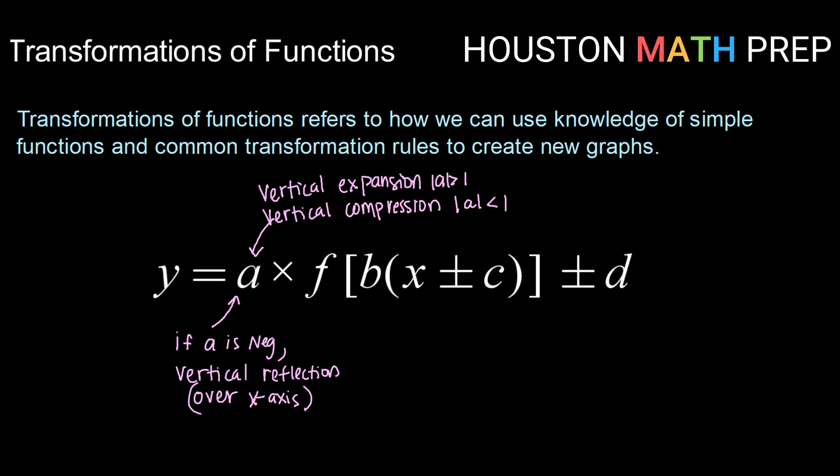Checking out our next value here, b. So this is a multiplier that is on the inside of our function notation. It has a similar role, but everything here is going to be horizontal. So here, if b is negative, then we will have a horizontal reflection, or flip, and that will be over the y-axis. So a left to right flip.